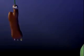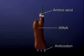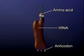Transfer RNA carries an amino acid which will be incorporated into the polypeptide. Its anticodon is a triplet complementary to the codon on messenger RNA that specifies that particular amino acid.